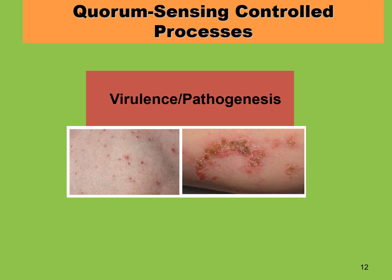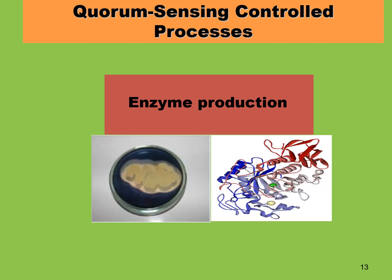Pathogens such as Pseudomonas, Staphylococcus aureus, and other pathogenic bacteria cause serious illnesses in humans as well as other organisms, and these infections are also controlled by quorum sensing. Additionally, enzyme production — bacteria are very small, minute organisms. Whenever they perform any functions, whether disease, degradation, biodegradation, or decomposition, they first produce extracellular enzymes. The quorum sensing system also controls the production of these extracellular enzymes.